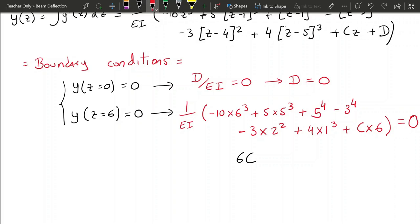So now, if we take the calculator, we're going to get that 6C minus 999 equals to 0. So we can conclude that C is going to be plus 333 divided by 2.